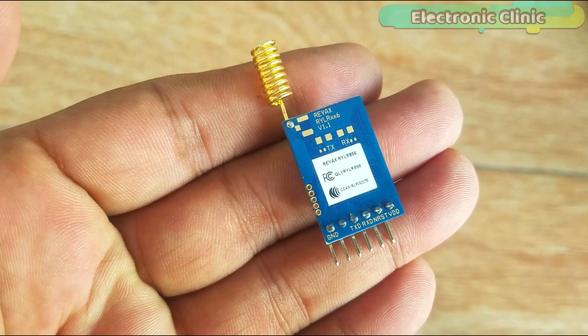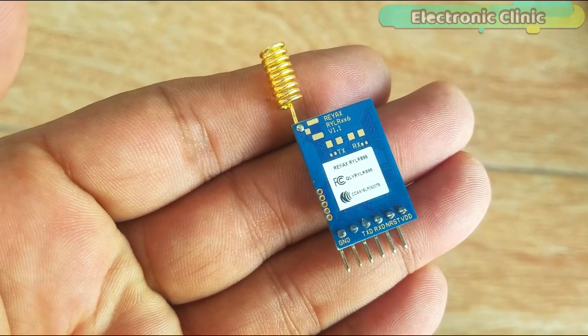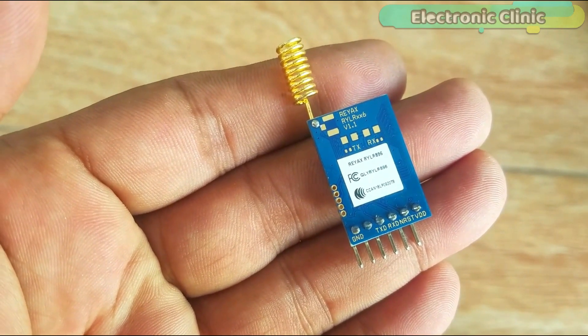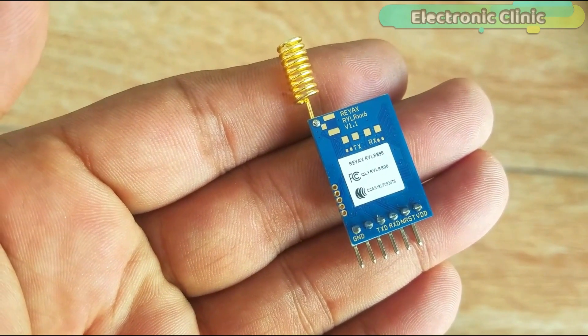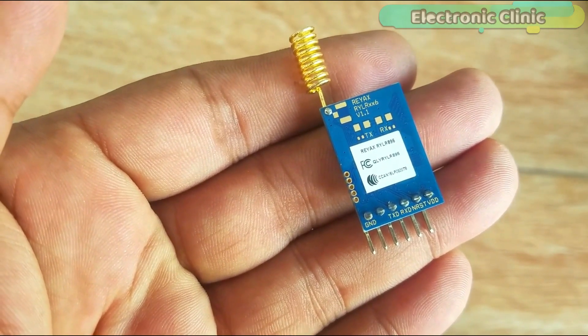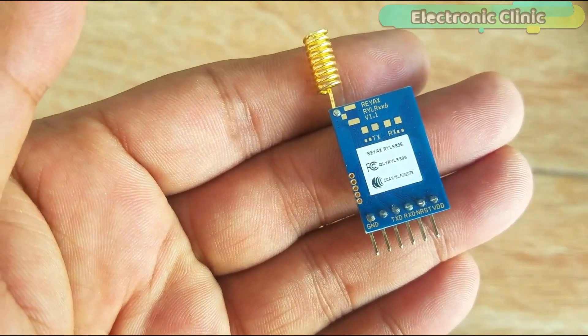As you can see this transceiver module has a total of six pins which are clearly labeled as VDD, NRST which is the reset pin active low, RXD, TXD. Pin number five is not used while pin number six is the ground.